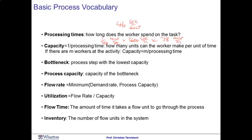This is the case where we have just one person working at a resource. If there are multiple people or machines carrying out the same work, we define the capacity as m, the number of parallel resources, divided by the processing time. The chain is only as strong as its weakest link — if we ask how much capacity the entire restaurant has, we look for the capacity of each individual step and pick the lowest. This is the idea behind the bottleneck: the bottleneck is the step with the lowest capacity.